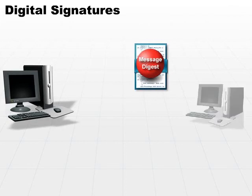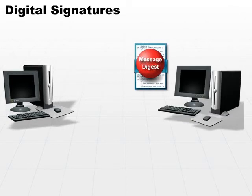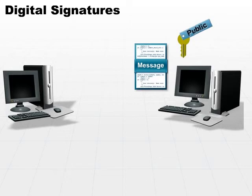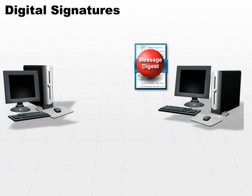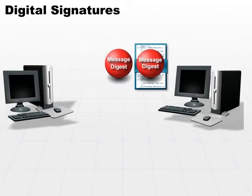The receiver receives the plain text message and receives the encrypted digest. First off, he decrypts the digest using the sender's public key to decrypt it. Then the receiver creates his own message digest of the received plain text message. So now he has two different digests — one that was sent to him from the sender, and one that he created himself.